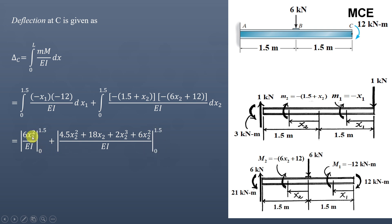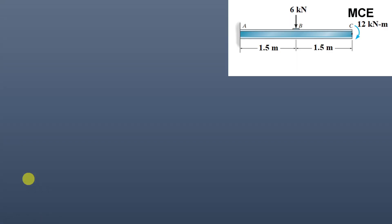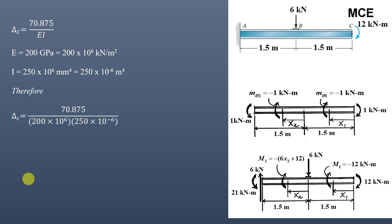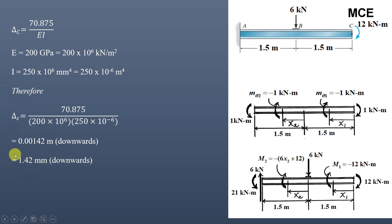After integration and evaluating from 0 to 1.5, adding both parts gives 70.875/EI. With E = 200 × 10⁶ kN/m² and I = 250 × 10⁻⁶ m⁴, the deflection at C = 70.875 / (200 × 10⁶ × 250 × 10⁻⁶) = 0.00142 m = 1.42 mm.